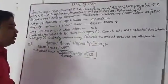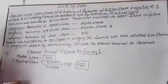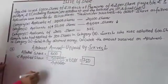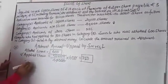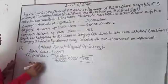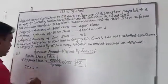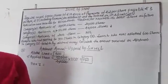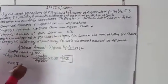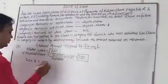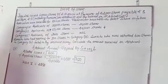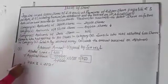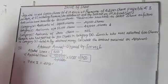Now calculate the amount paid by Suresh at the time of application. How much amount was paid by Suresh? That is 2,250 rupees — the amount paid by Suresh at the time of application.